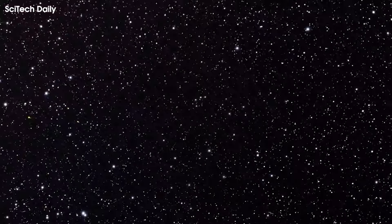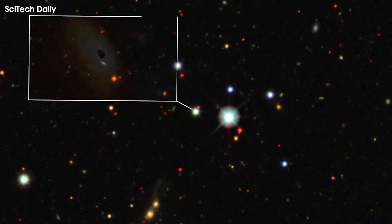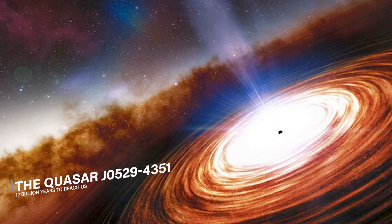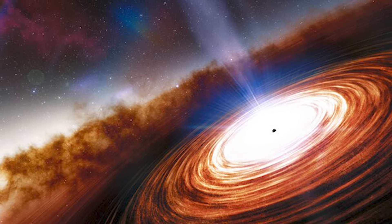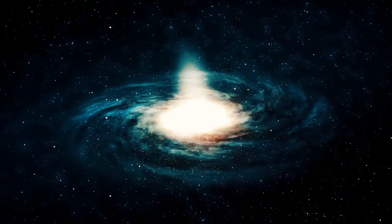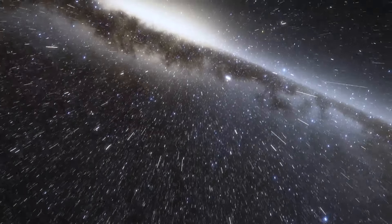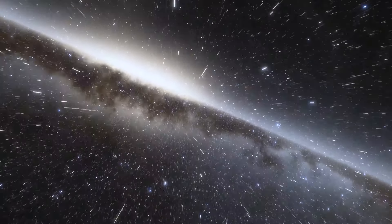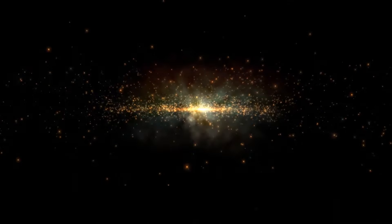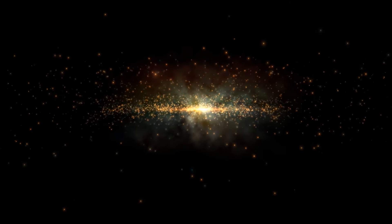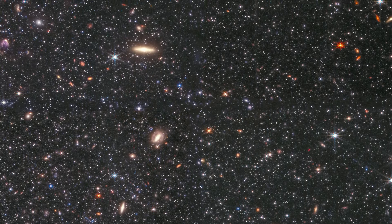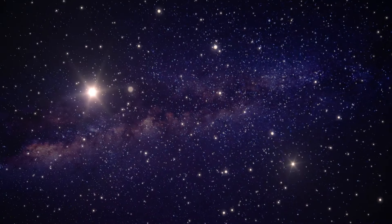The quasar, named J0529-4351, is located so far from Earth that its light has taken 12 billion years to reach us, meaning it is seen as it was when the 13.8-billion-year-old universe was just under 2 billion years old. The supermassive black hole at the heart of the quasar is estimated to be between 17 billion and 19 billion times the mass of the Sun. Each year, it eats, or accretes, the gas and dust equivalent to 370 solar masses.